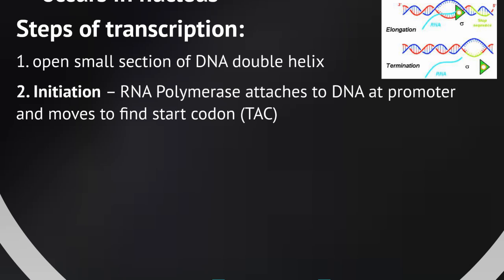Initiation is when an enzyme called RNA polymerase attaches to DNA at a promoter region and moves along to find a start codon — and that start codon is TAC. This is the same start for any gene anywhere in the DNA. Breaking down the name: '-ase' means it's an enzyme, 'poly' means many, 'mer' means unit — so RNA polymerase is an enzyme that builds polymers of RNA.